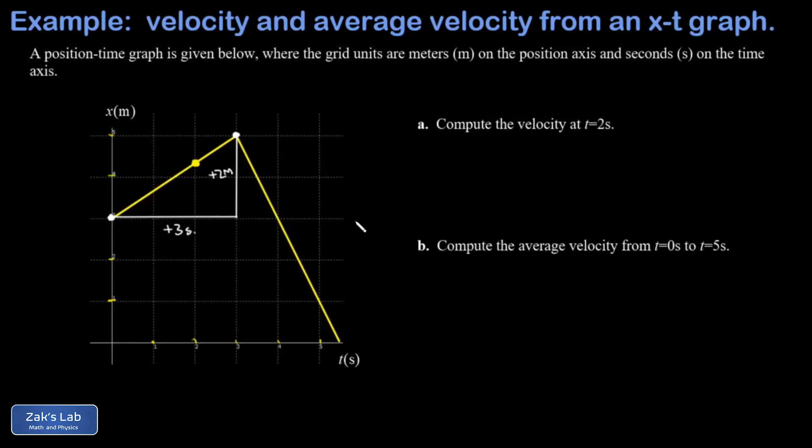And so the slope of that line is two meters over three seconds, or two-thirds meters per second. Or if you want to state it as a decimal to three sig figs, I could write 0.667 meters per second.